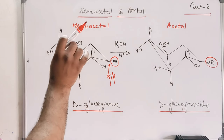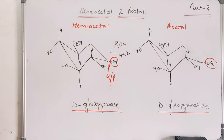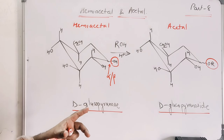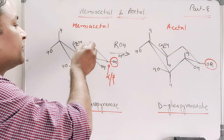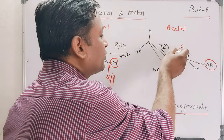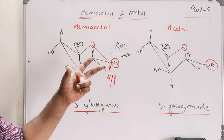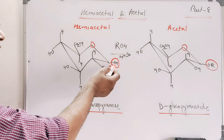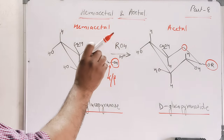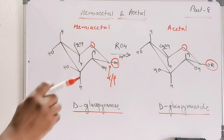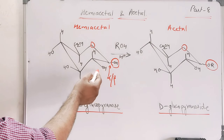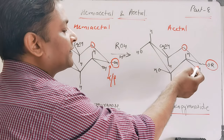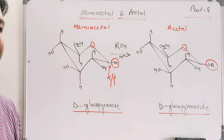Acetal contains OR and hemiacetal contains OH — this is the main difference between hemiacetal and acetal. When alcohol in the presence of acid is treated with hemiacetal, only the anomeric OH is affected. Note this down clearly: when alcohol is treated with H⁺, only the anomeric acetal OH is affected — no other OH is affected. The other OH groups remain intact. I will explain the reason for this in a later section.